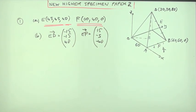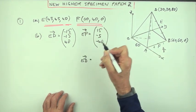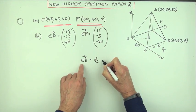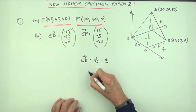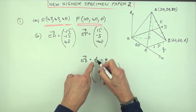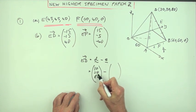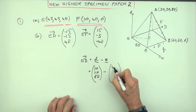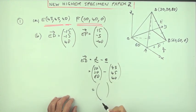Now, it's only one mark for the pair of them. If you want to spend the time setting it all out the way that you're used to, saying, well, ED will be the position vector of D minus the position vector of E. And then write them all out again. D was 30, 30, 80. 30, 30, 80. E was 45, 45, 40. 45, 45, 40.